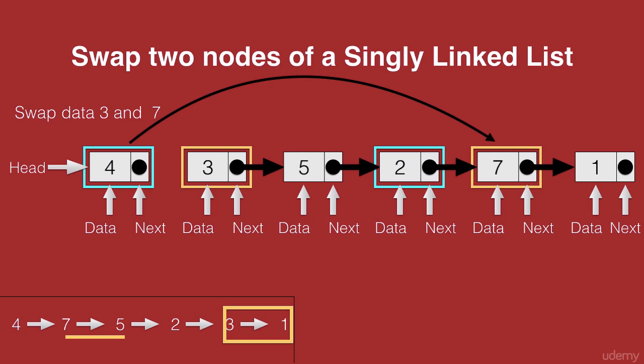So before we remove the connection to 1, we first store 1 in a temporary node. And then we remove the connection from 7 to 1 and establish this connection from 7 to 5.